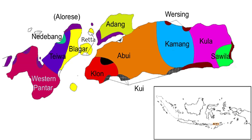Blagar is a Papuan language of Pantar Island in the Alor Archipelago of Indonesia. The Tarawang dialect, spoken on Tarawang Island off the southeast coast of Pantar, is sometimes considered a separate language. Use of the language is declining in favor of Indonesian. In the 1970s, Indonesian replaced Blagar as the language of the church and the mosque. In the early 2000s, the introduction of electricity on Pura Island further increased the influence of Indonesian.